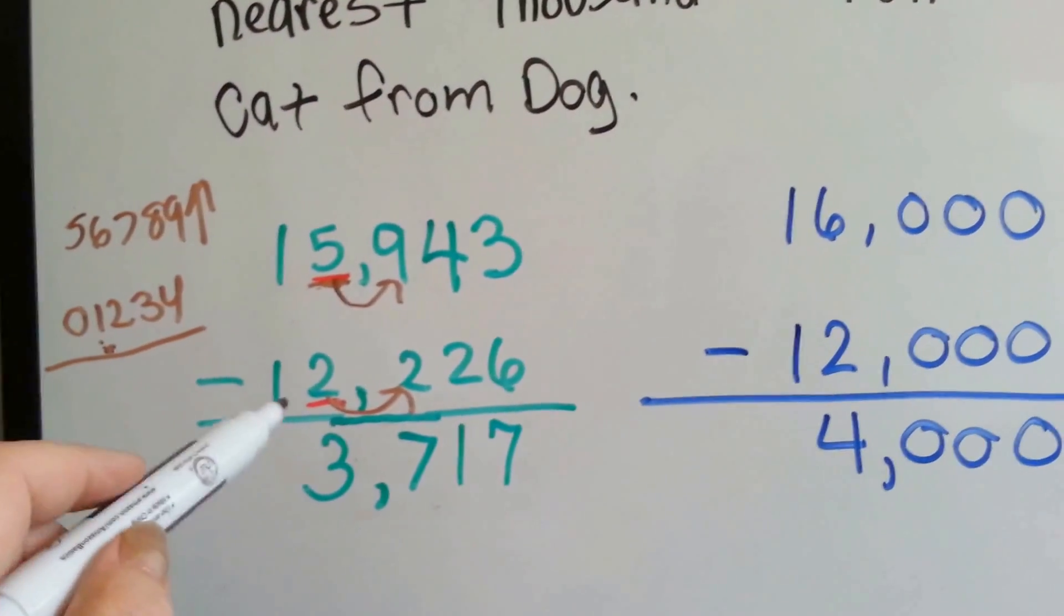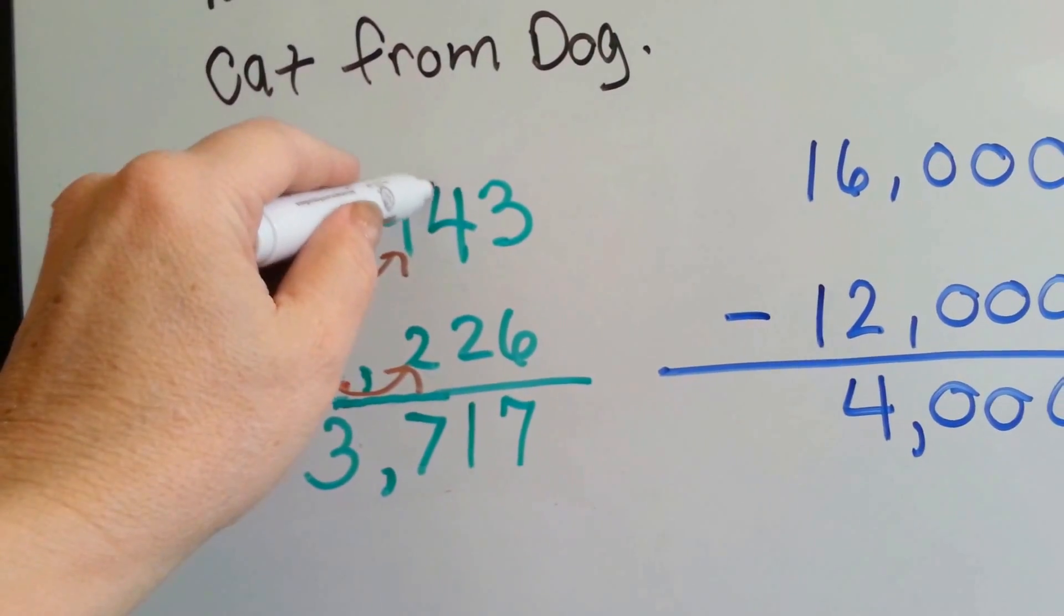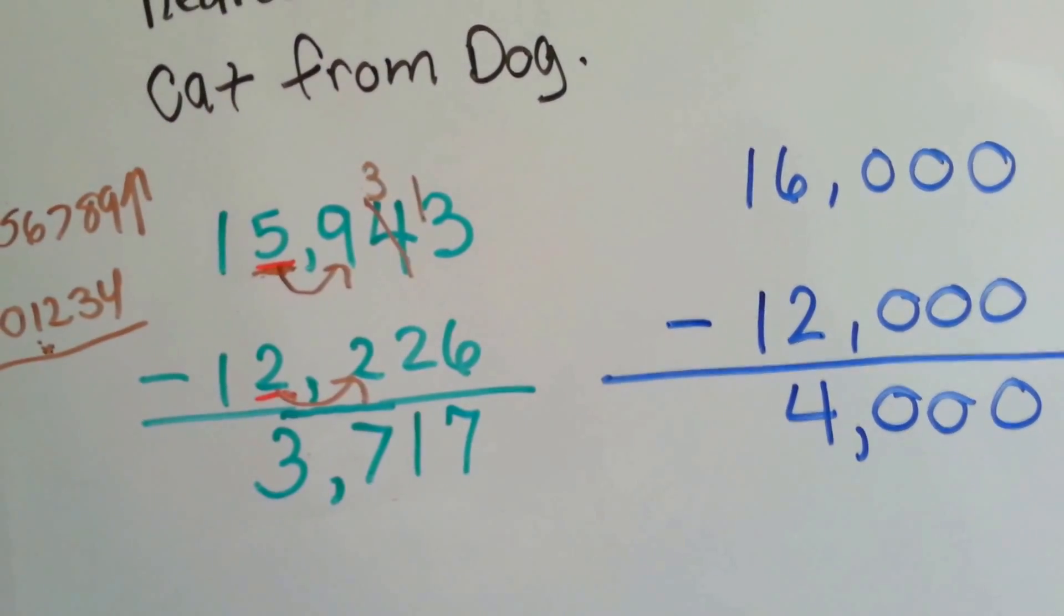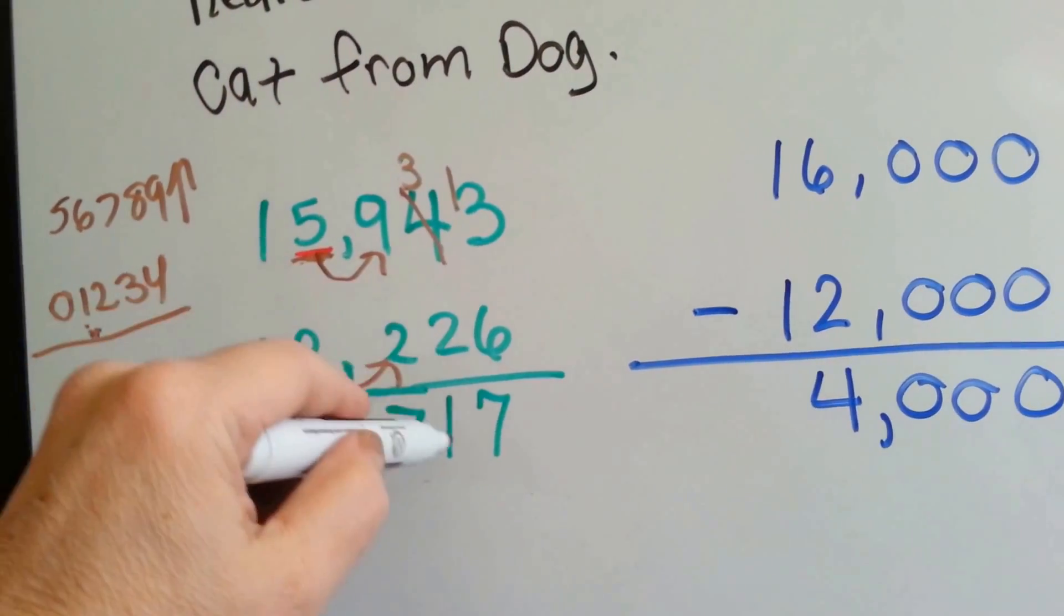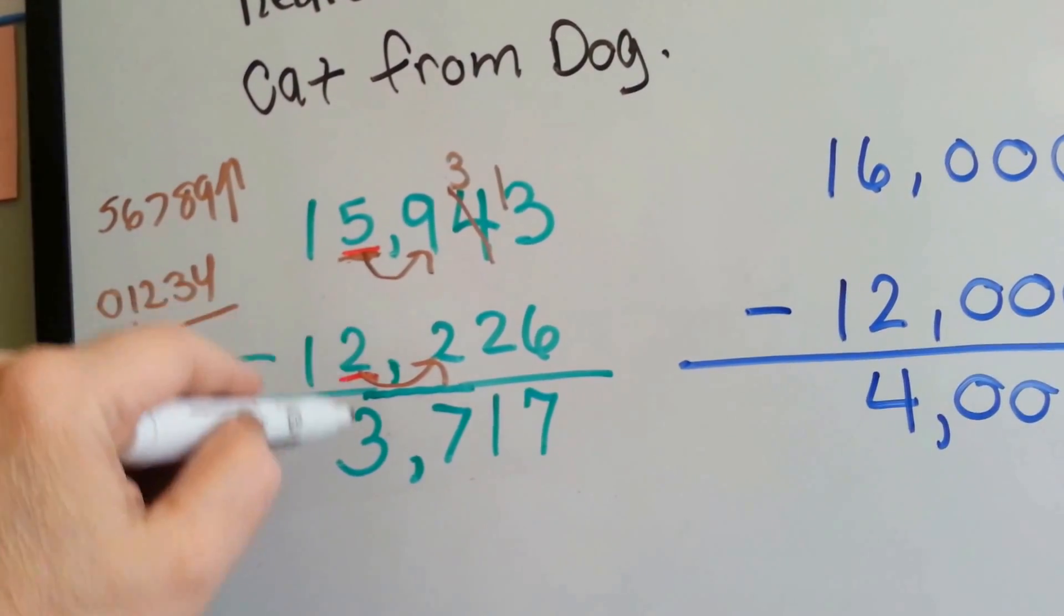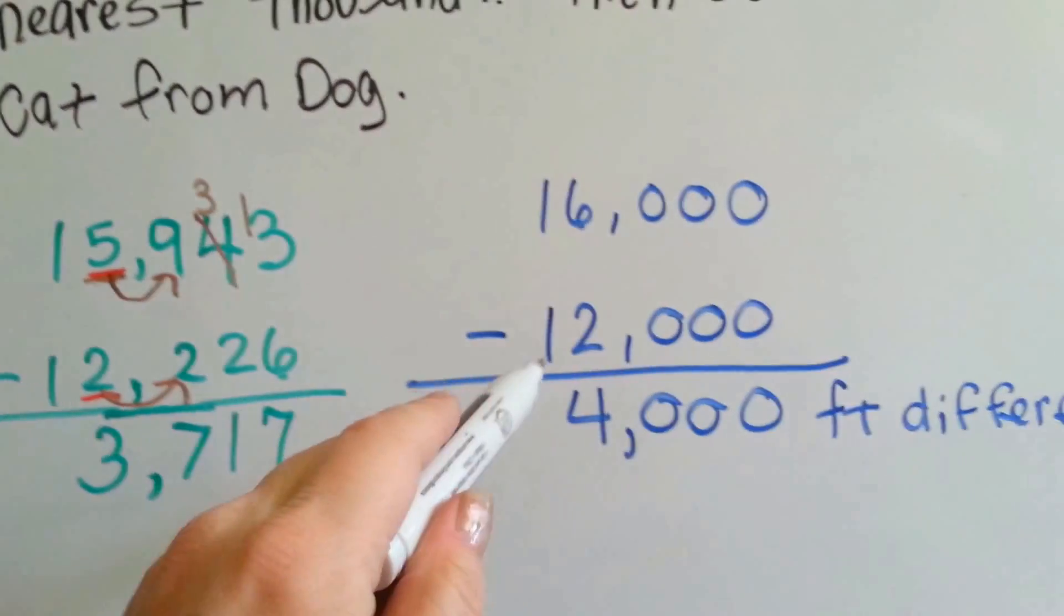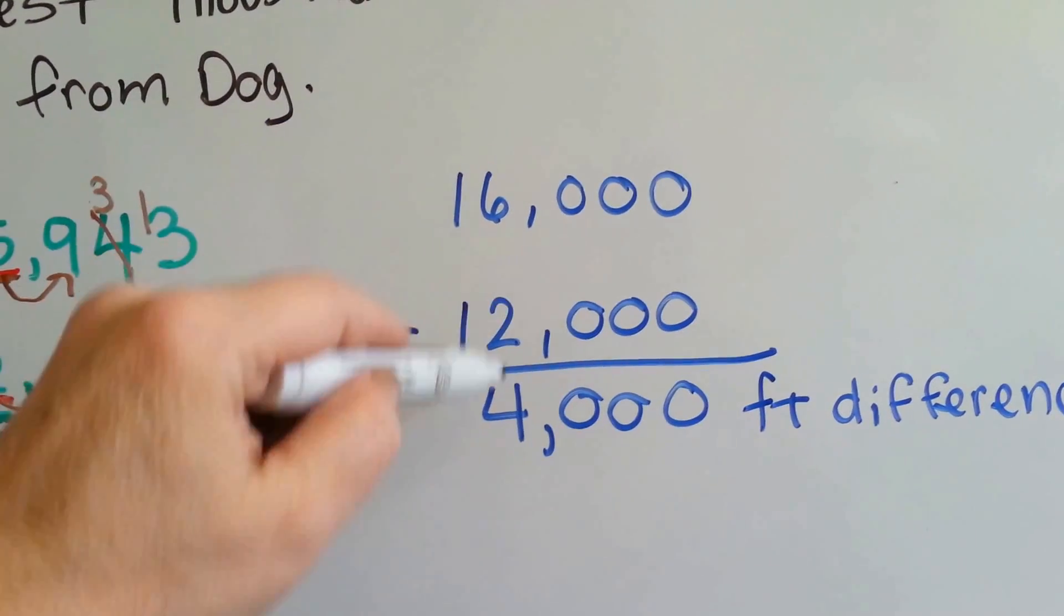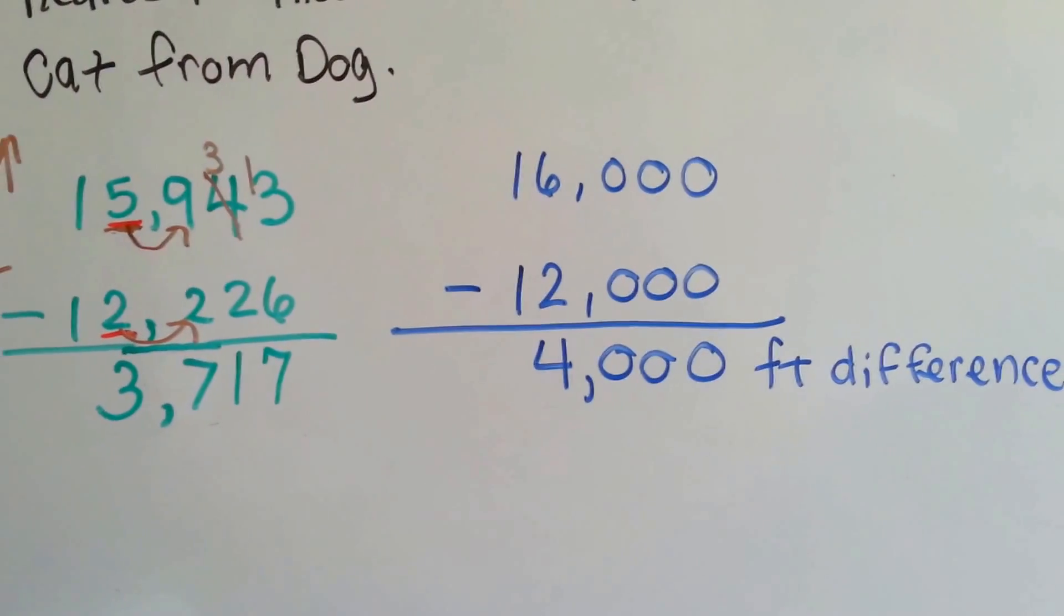If we do the real subtraction, 3 take away 6, you can't do it. So, we have to borrow from this 4. It becomes a 3, and the 3 becomes a 13. 13 take away 6 is 7. 3 now take away 2 is 1. 9 take away 2 is 7. 5 take away 2 is 3. And 1 take away 1 is 0. When we do this one, 16,000 minus 12,000, the 6 minus the 2 is a 4, and we get 4,000 for a difference. See that? See how we did that?